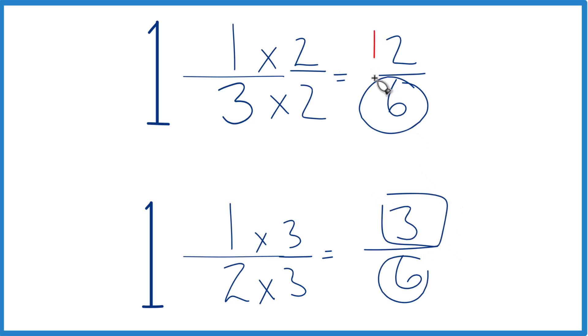We're going to compare the numerators, figure out which is larger. So 3 is larger than 2. That means 3 sixths is larger than 2 sixths, only by 1 sixth, but it's still larger.